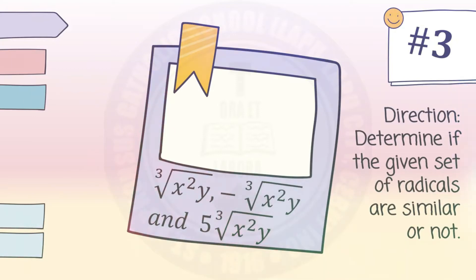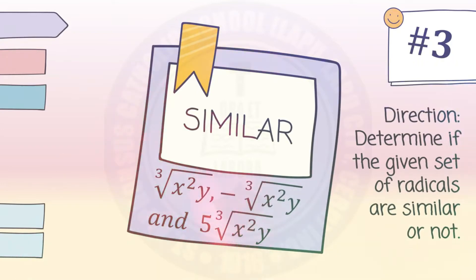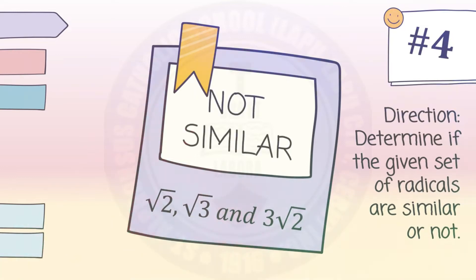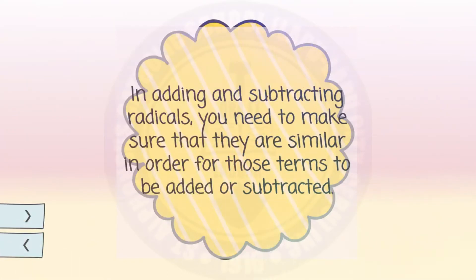and five cube root of x squared y. These three radicals are similar since all three have an index of three and a radicand of x squared y, satisfying the definition of similar radicals. Number four: square root of two, square root of three, and three square root of two — these are not similar since they have different radicands. Remember: in adding and subtracting radicals, the terms must be similar in order to be added or subtracted.